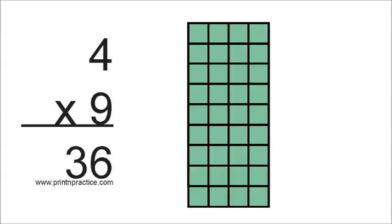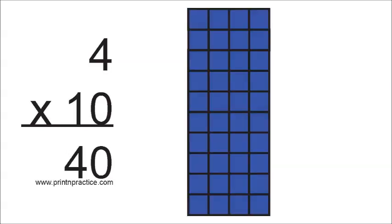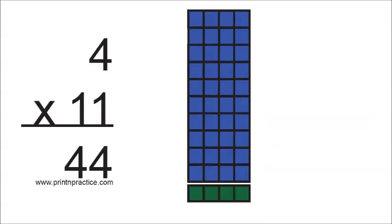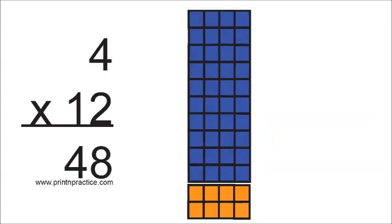Four times eight are thirty-two. Four times nine are thirty-six. Four times ten are forty. Four times eleven are forty-four. Four times twelve are forty-eight.